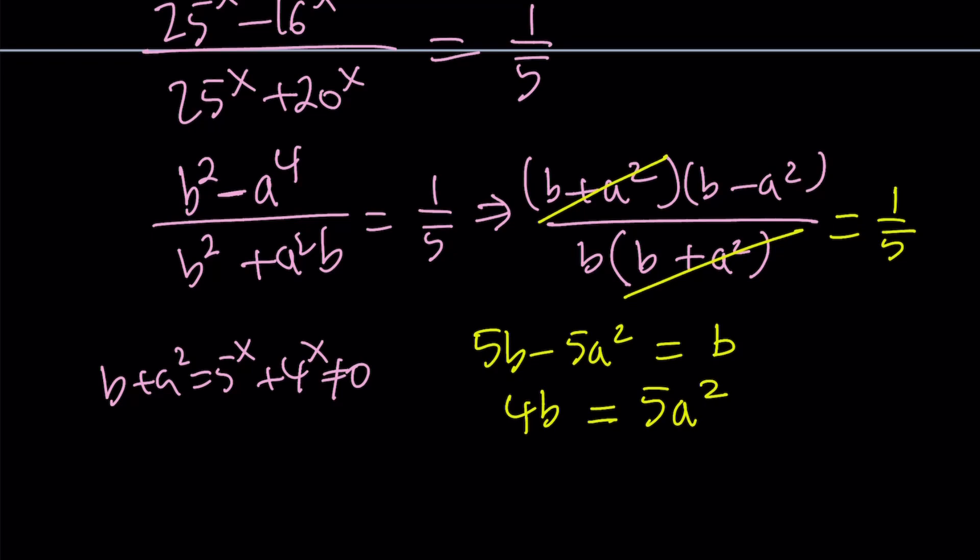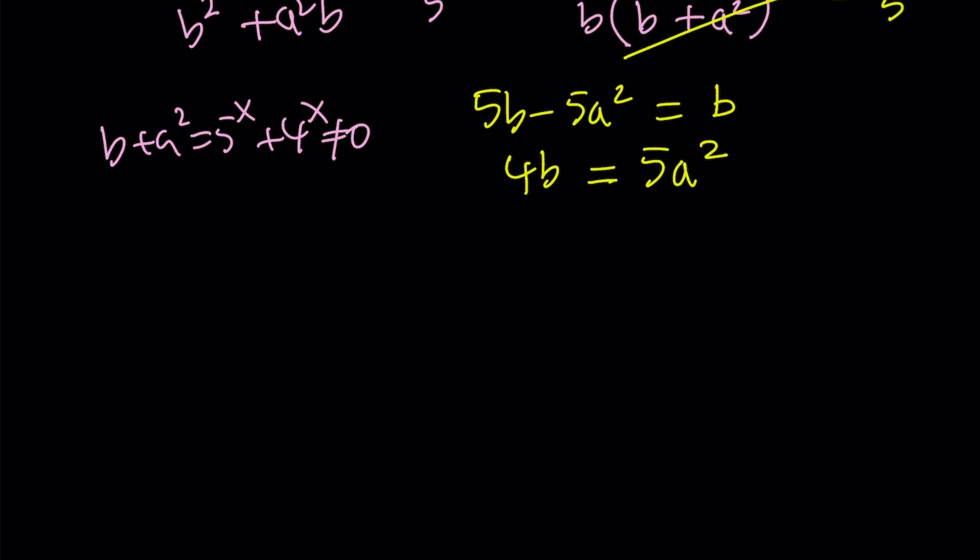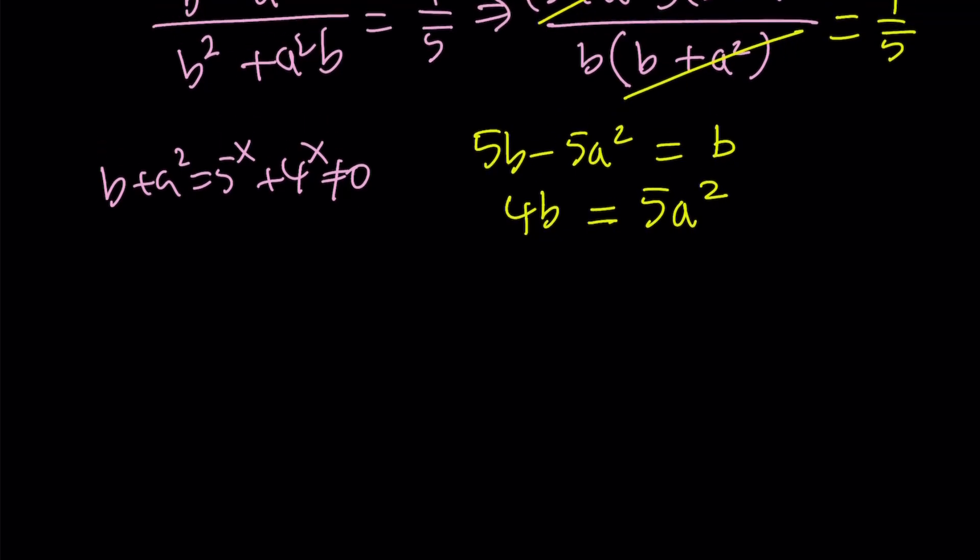Okay, I probably should have picked a different variable instead of b, but you get the idea. So we get 4b equals 5a squared. Now let's go ahead and back substitute. What is b? It is 5 to the power x. And a is 2 to the power x. Therefore, we can just write this as 4 to the power x.